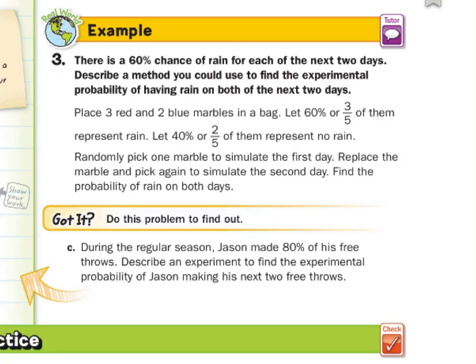If you were to place three red and two blue marbles in a bag, 60% or three-fifths of them would represent rain, 40% or two-fifths of them would represent no rain. Randomly pick one marble to simulate the first day. Replace the marble and pick again to simulate the second day. Find the probability of rain on both days.